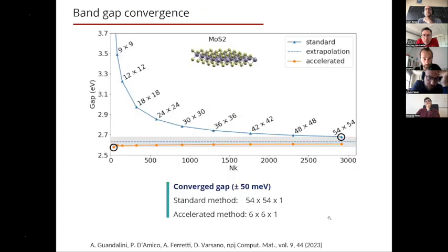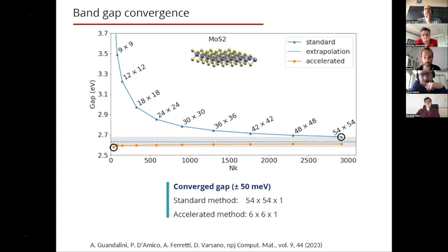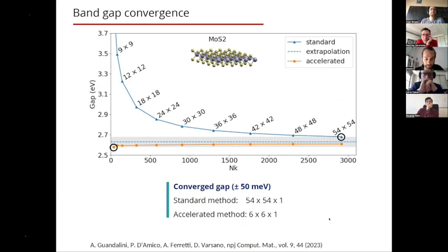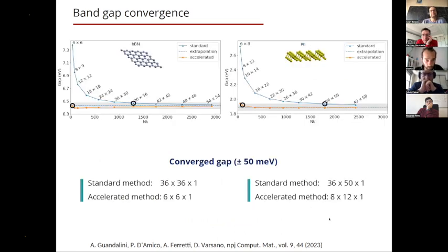The convergence of the quasi-particle gap with the accelerated W-averaging method is compared with the standard method. Already with the 6×6 grid — the one that converges DFT calculations — we obtain a converged gap value within 50 meV, whereas a 54×54 grid is needed with the standard method.